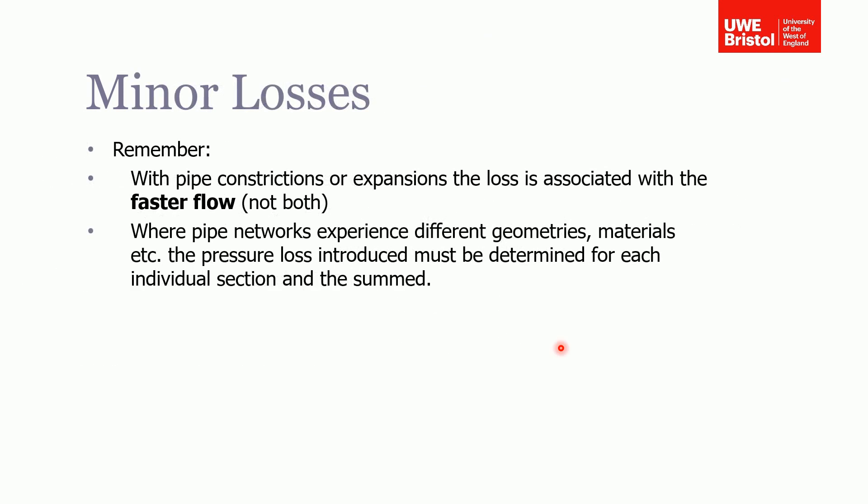So just a few things to remember. With pipe constrictions or expansions where there's a sudden change, the loss is associated with the velocity in the faster flow pipe—not both. You don't want to double account for the loss.